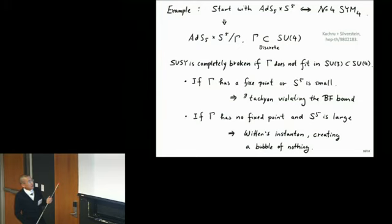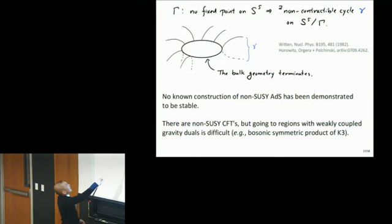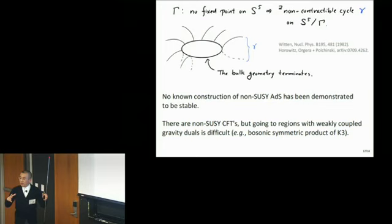How about if it doesn't have a fixed point? Even if it doesn't have a fixed point, if S5 is small, you still have tachyon. If S5 is large, then there is a new kind of instability that was pointed out by Witten many years ago, related in the context of non-supersymmetric Kaluza-Klein compactification. If gamma does not have a fixed point in S5, there is a non-contractable cycle in this quotient which breaks supersymmetry. If you have that, you can construct geometry where as you go into the deep in the AdS side of the bulk, this cycle actually contracts and creates the bubble of nothing, which expands and hits the boundary in finite time. This was explicitly constructed by Horowitz, Orgera, and Polchinski in 2007.